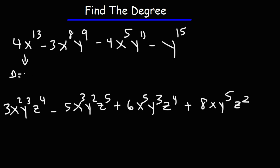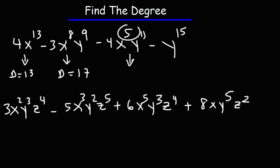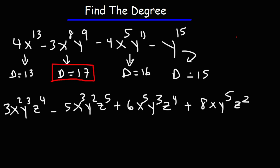The first term has a degree of 13. For the second one, 8 plus 9 gives us 17. For the third term, 5 plus 11 is 16. And the last one is going to be 15. So the highest degree is 17, and that is the degree for this entire polynomial.